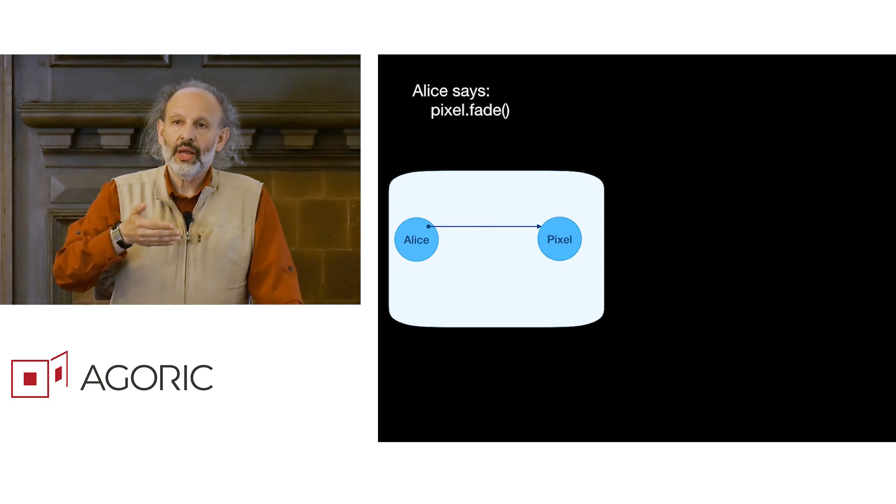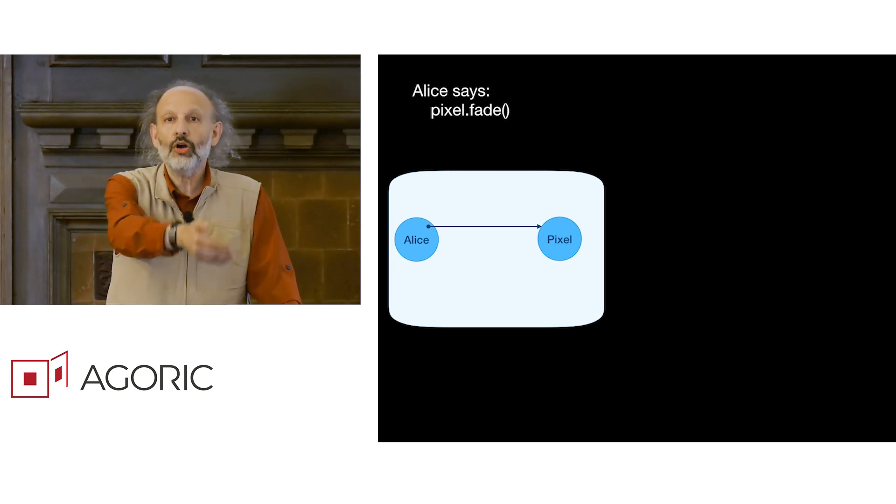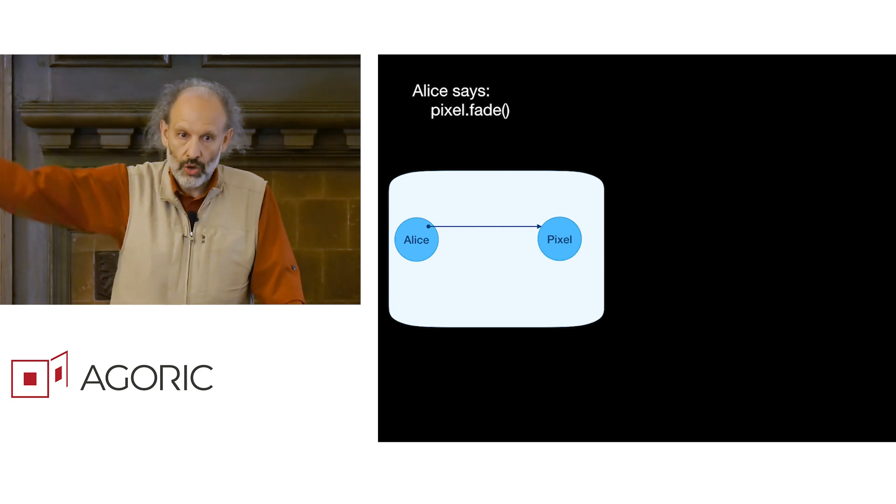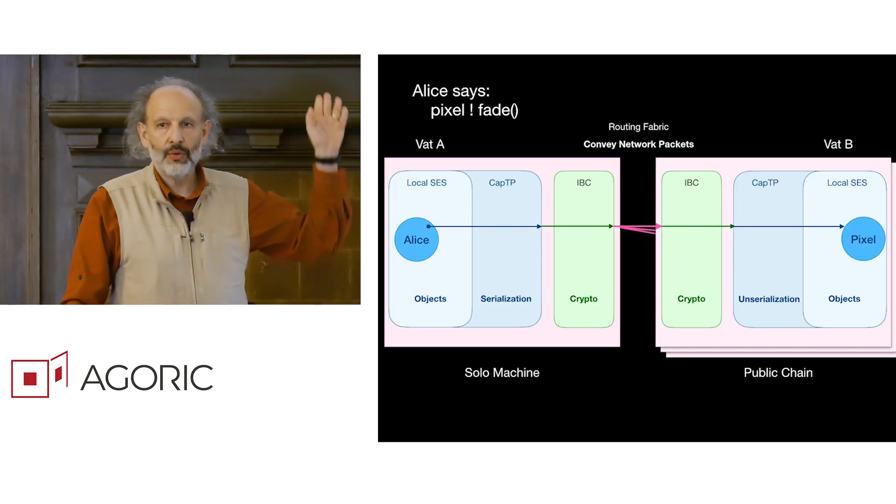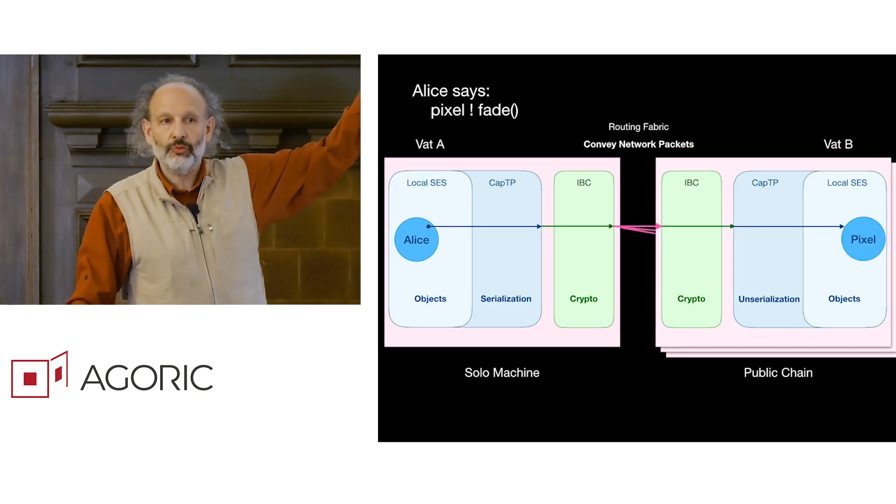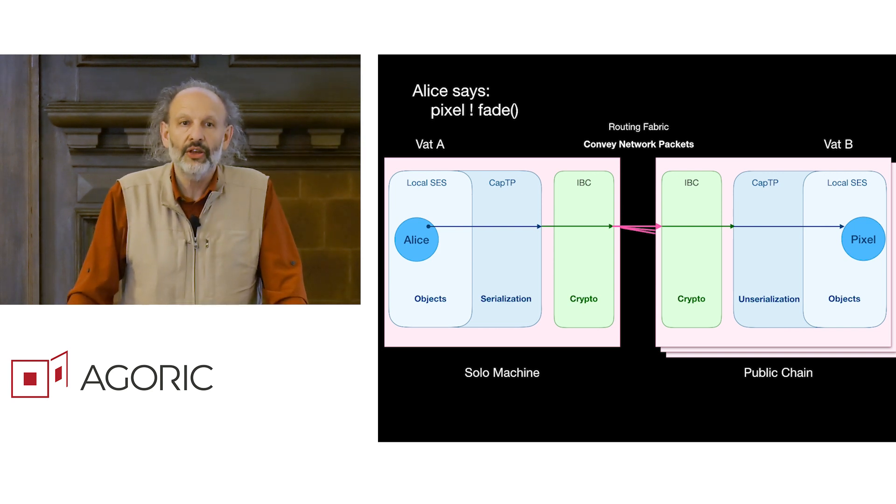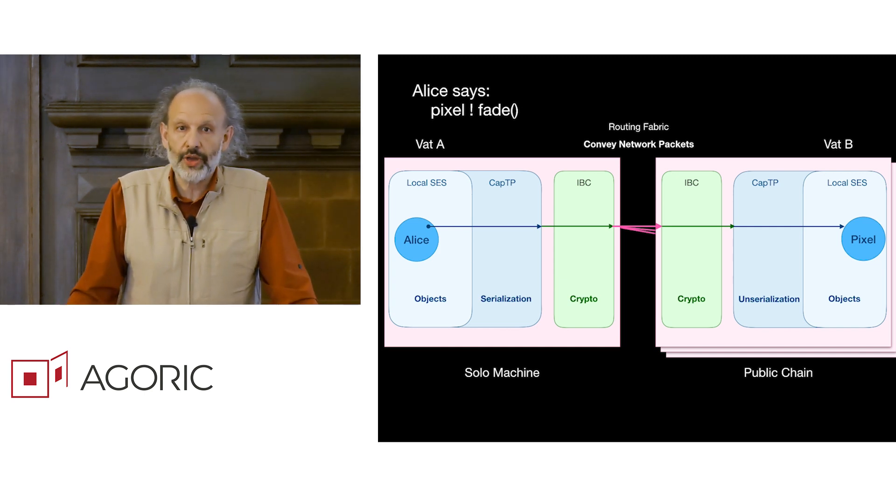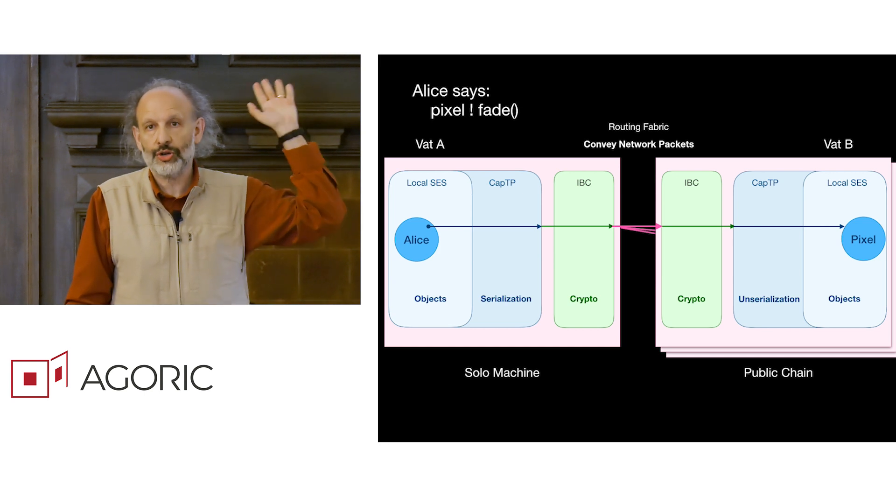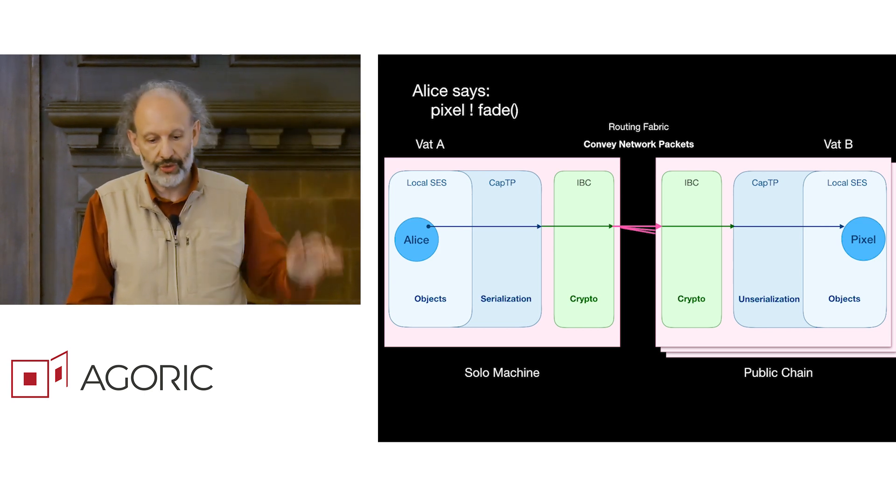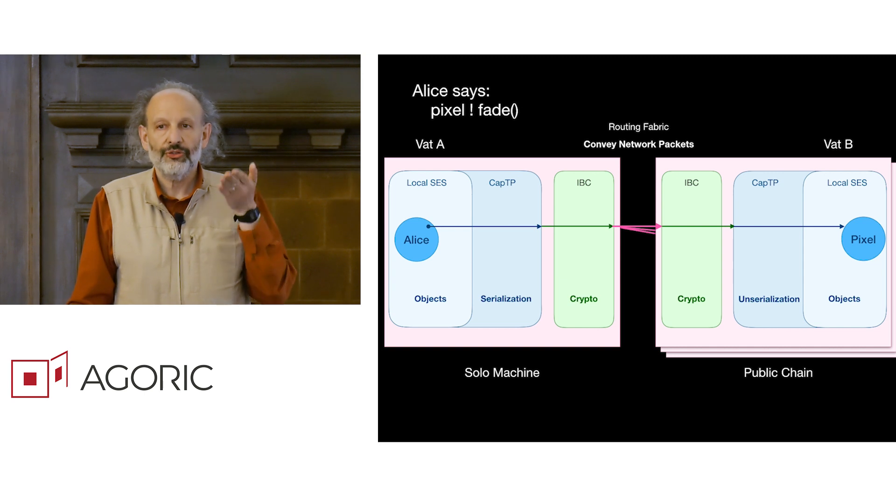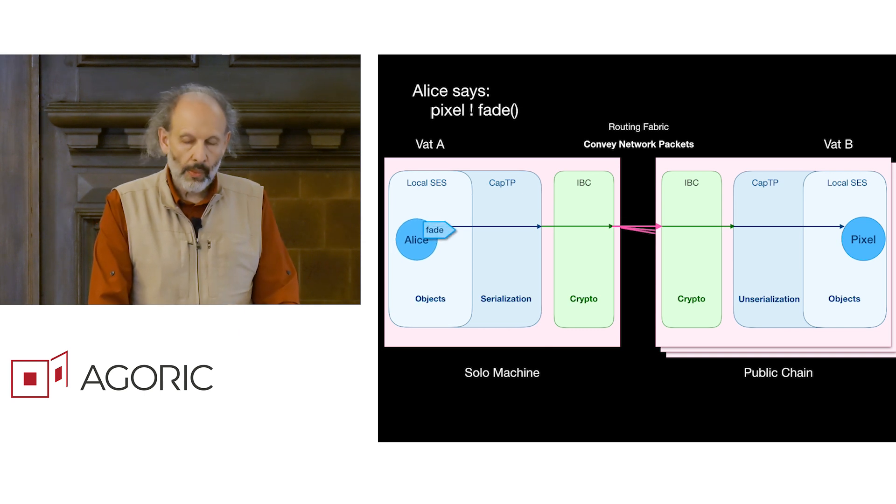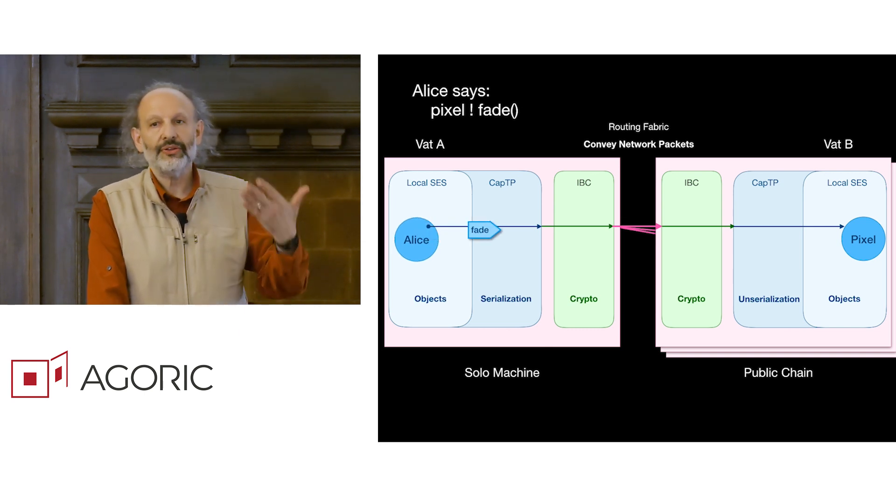What if the pixel is not on Alice's machine, is not co-located with Alice? What if the pixel is elsewhere on a chain as in what you saw? Well, now instead of dot, we use the infix bang operator, which means eventual send, send an asynchronous message. The syntax is currently proposed to the ECMAScript committee. It's simple syntactic sugar for things that you can write without the syntax. But the semantics of it are, send the message to the object wherever the object is.